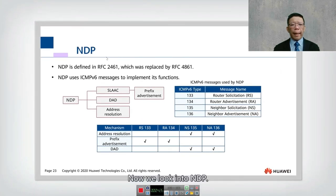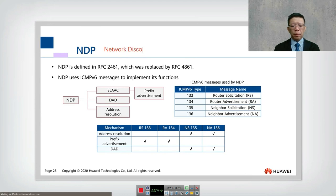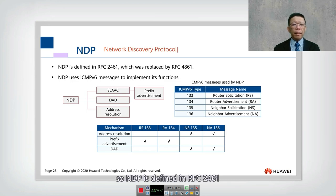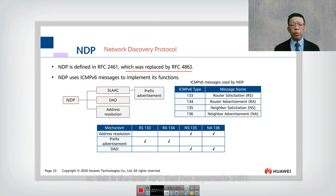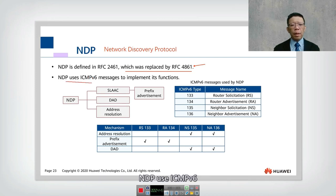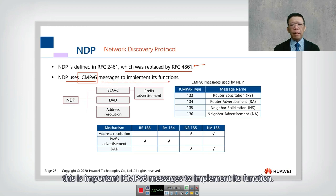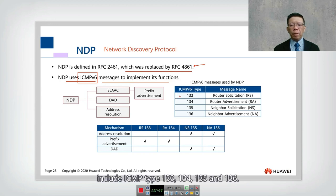Now let's look into NDP, the Neighbor Discovery Protocol. NDP is defined in RFC 2461, which has been replaced by RFC 4861. NDP uses ICMPv6 messages to implement its functions. The ICMPv6 types used by NDP include type 133, 134, 135, and 136.